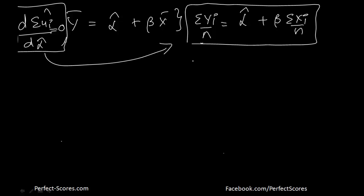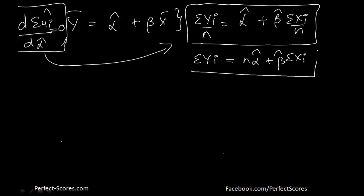Another way of writing this would be: summation of yᵢ is equal to n into α̂ plus β̂ into summation of xᵢ. That's a better way of writing this equation. So this is the first equation that we've gotten, and I'm going to label it as number 1.